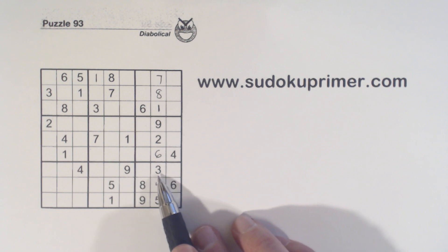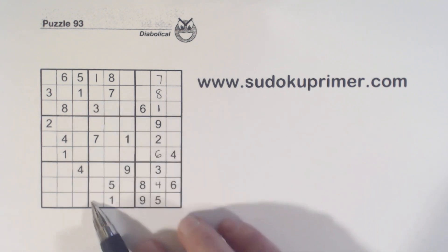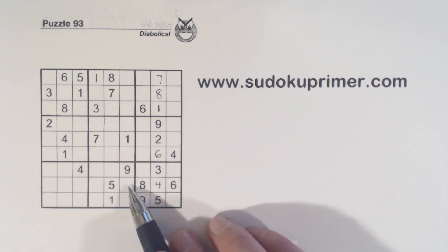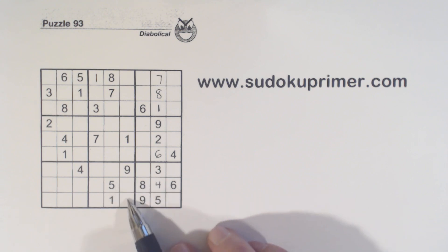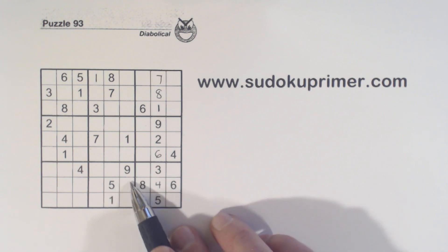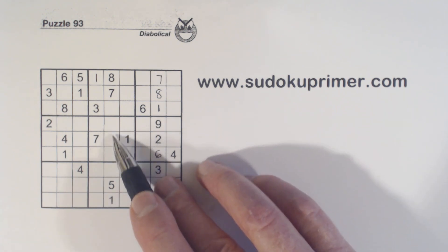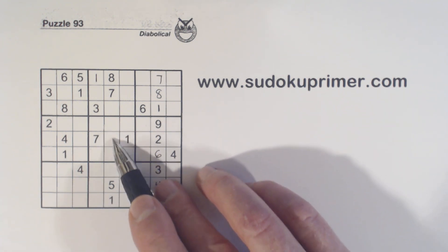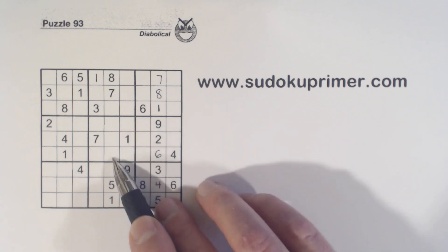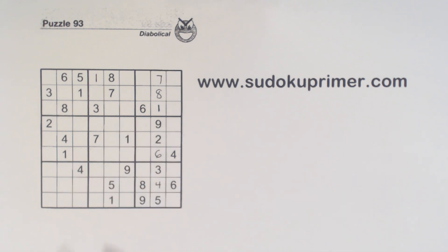But we've got an unrelated three over here. A three there and a three there also means that the three has to go here. So therefore we know these are three-seven twins. We also know that the three has to go in one of these three cells right here — we can't fill it in yet, but we know that.